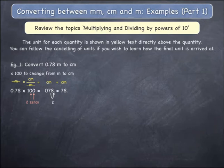The units of metres cancel, leaving only centimetres which becomes a final unit. 0.78 metres equals 78 centimetres.